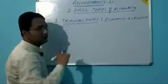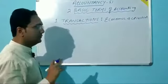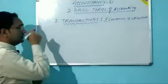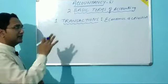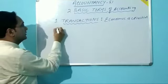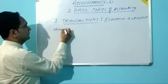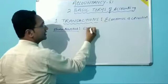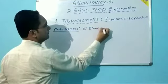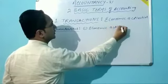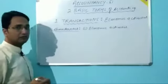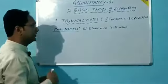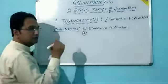Financial position means assets, liabilities, and capital of a company. Now there are some characteristics of transactions. The very first characteristic is economic activity — all transactions which are of financial nature are known as transactions of business.